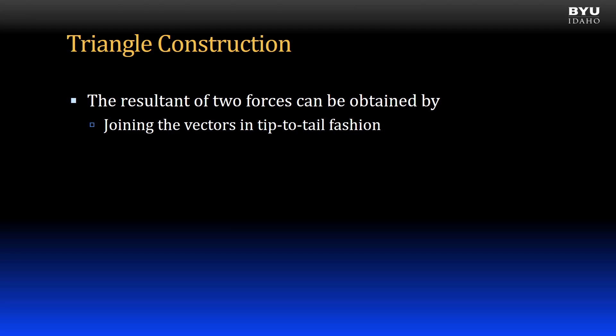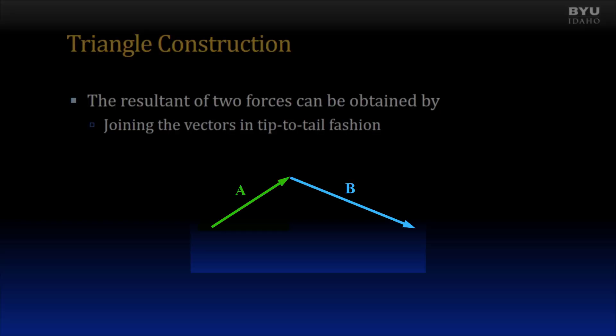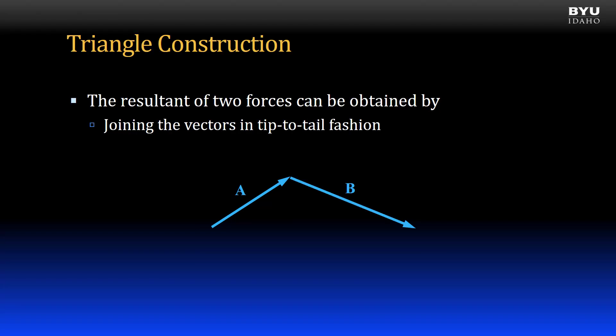With triangle construction, I graphically join the vectors in a tip-to-tail fashion as shown. I start with vector A and place vector B so its tail is at the head of vector A. The resultant extends from the tail of vector A to the head of vector B.